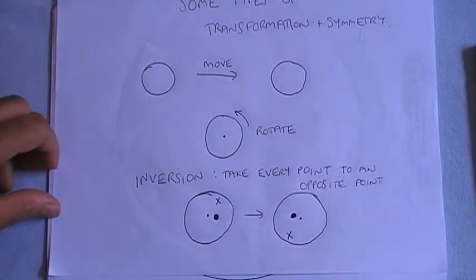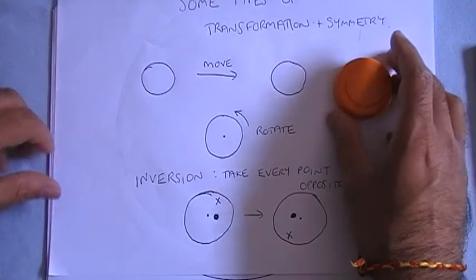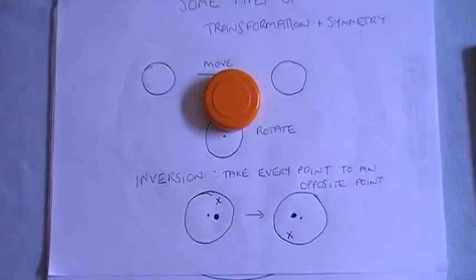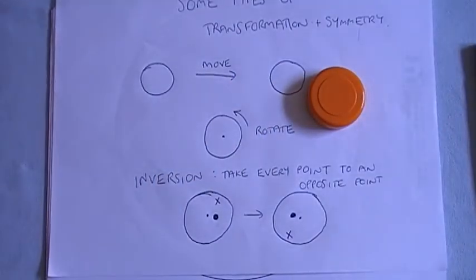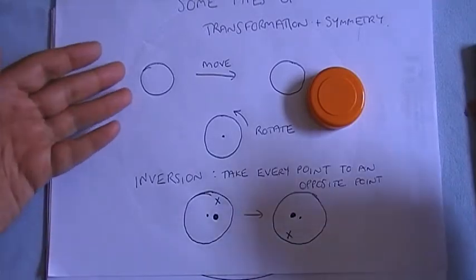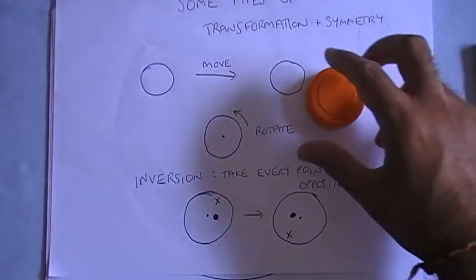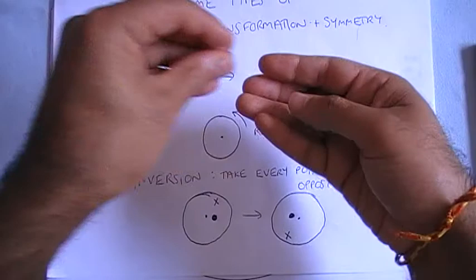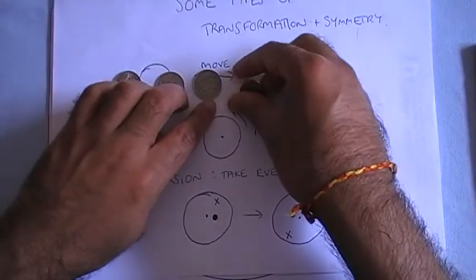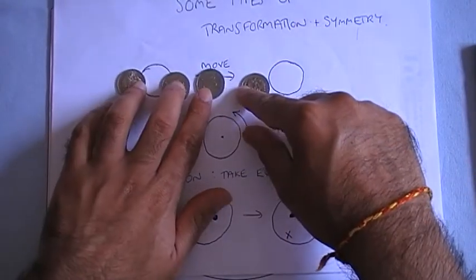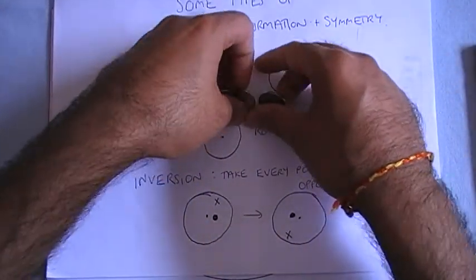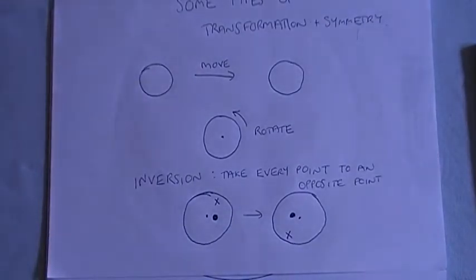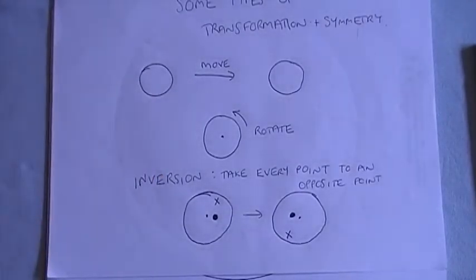So for instance, if I put a disk, imagine that this whole table is a blank canvas and I put a disk somewhere. Well, if I move the disk, the figure will look different. So it's not symmetric under motion. But if I imagine I had an infinite line of disks like this on my blank canvas and then I move them all along by one, then the figure would look exactly the same. And so it would be symmetric under certain types of motion.